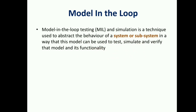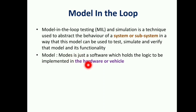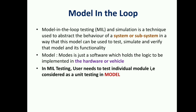Before going into Model in the Loop, you have to understand what exactly a model is. A model is simply software — it holds the logic to be implemented in the hardware or the vehicle. It is just logic, like code. Instead of writing code directly, developers develop the model, which then gets converted — it gets programmed into code. That is what Model in the Loop specifies: it is a kind of auto-generated code. If you want to debug or change any logic in the system or subsystem, you can go back and deal with the coding part.